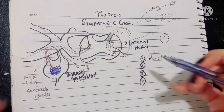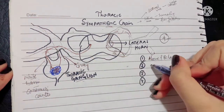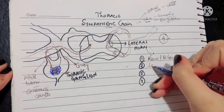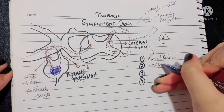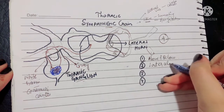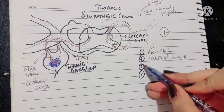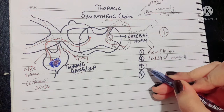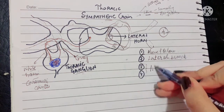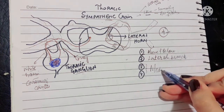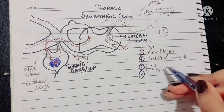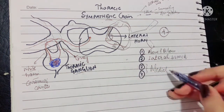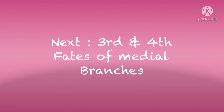This lateral branch provides general distribution of sympathetic fibers to the limbs and appendages. The third and fourth fates involve the medial branches of the sympathetic chain.